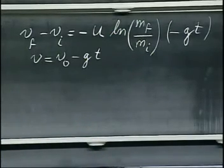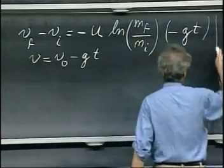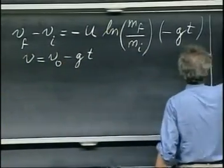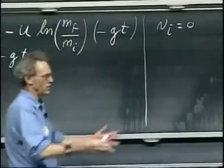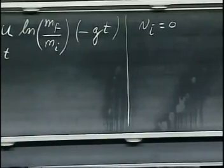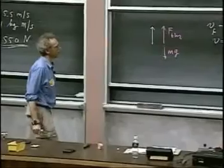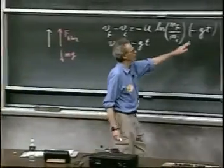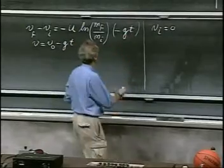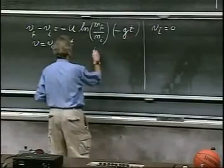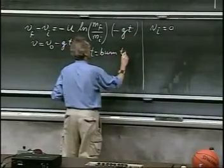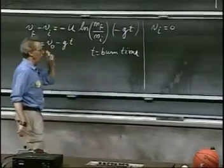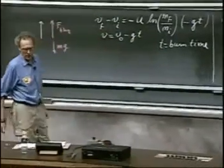We launch from the Earth and we now have an initial speed of zero. The rocket is standing there and we fire the rockets. T, by the way, is the burn time of the rocket. Let me write that down: T is the burn time. So initial speed is zero.